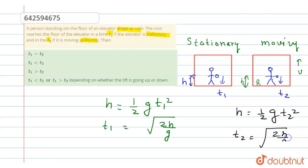In both cases, t1 is equals to t2 because it is an inertial frame. Both are inertial frames. So t1 is equals to t2, so option first is the correct option. I hope you understand the explanation. Thank you.